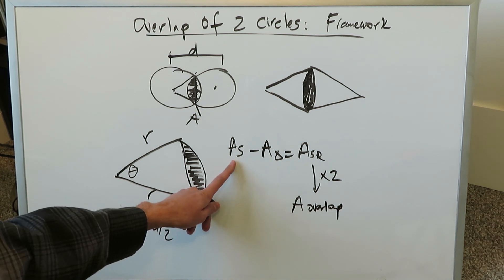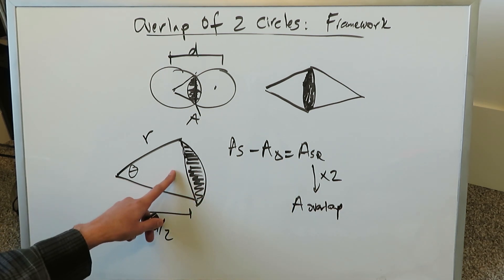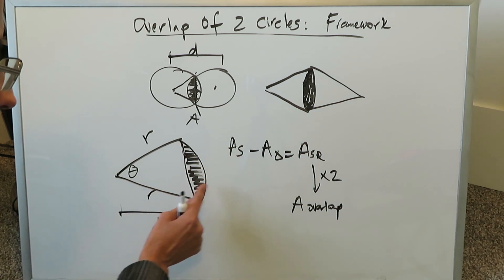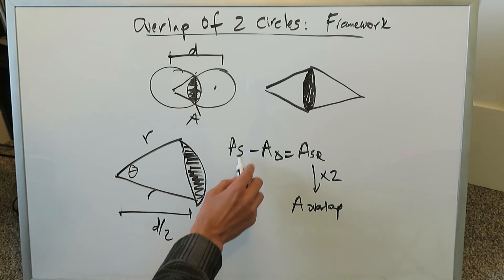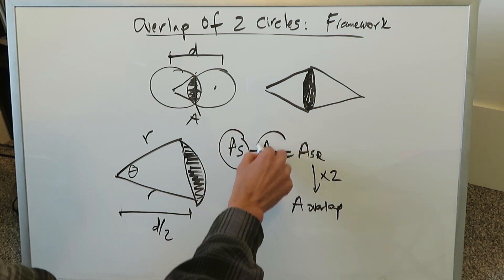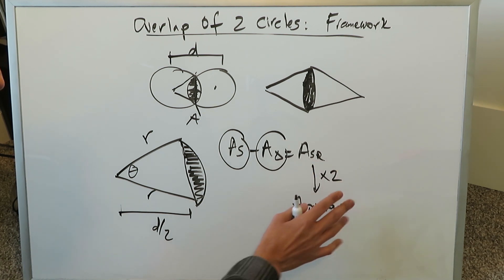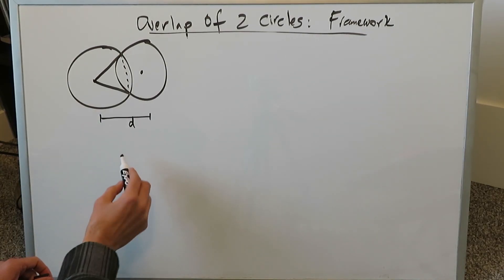We have to learn how to calculate the area of the sector, subtract from that the area of the triangle, get the shaded region, multiply by two, and get the area of overlap. Let's work on this piece by piece — the sector first, then the triangle, then the difference, giving the shaded region. Multiply that answer by two and that gives exactly what we want for the area of the overlap.